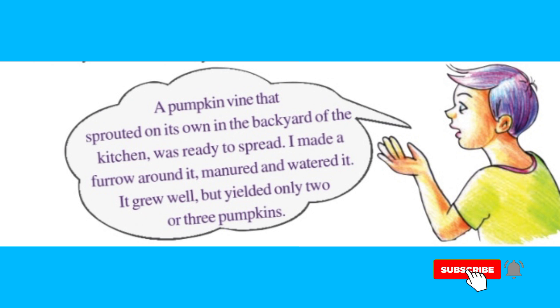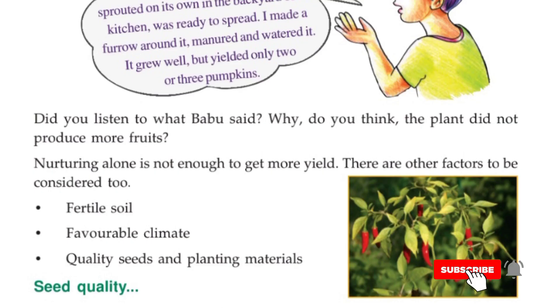A pumpkin vine that sprouted on its own in the backyard of the kitchen was ready to spread. Babu made a furrow around it, manured it, and watered it. It grew well but yielded only two or three pumpkins. What do you think will be the reason for this? Did you listen to what Babu said? Why do you think the plant did not produce more fruits? Nurturing alone is not enough to get more yield — there are other factors to be considered.